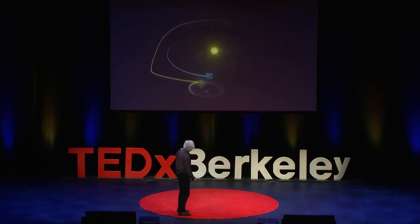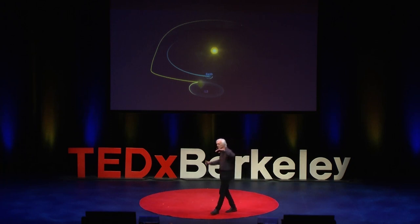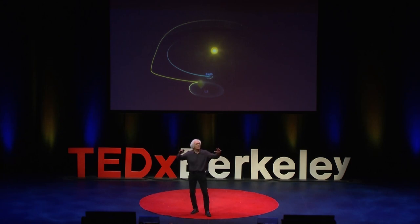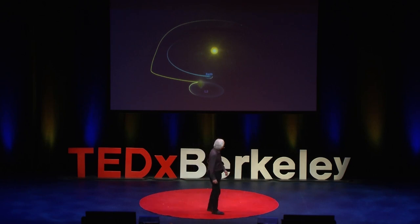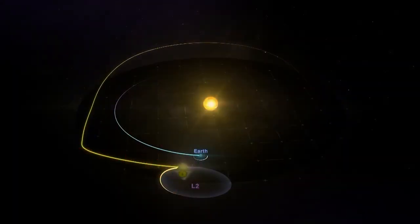Who built the Webb Telescope? The quick answer is engineers — engineers from 14 different countries coordinated their thinking and built it. But they drew upon the collective as well. Isaac Newton invented the equations of gravity; scientists studied them and found that theoretically there are strange points in the Earth-Sun system where gravitational forces balance out. Three centuries later, we've gone there — we've put the Webb Telescope at L2, the equilibrium point, 94 million miles from the sun.